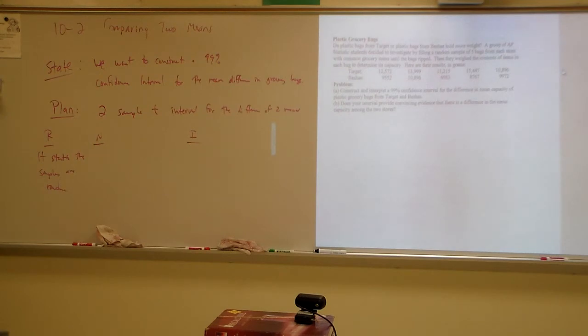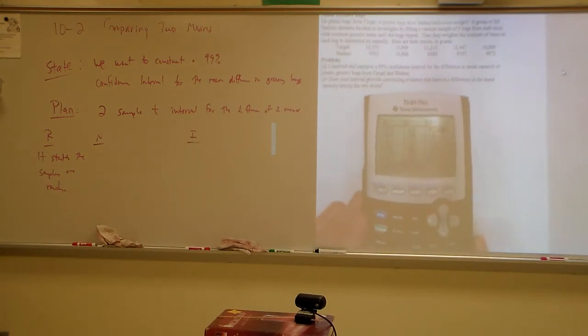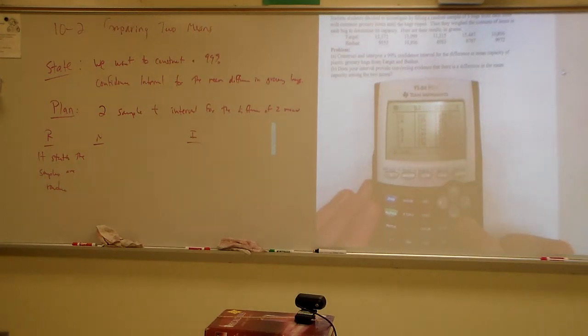Random, random sample. It states the samples are random. N, uh-oh. We've only got five, five in each sample. That's not good. That means that's extra work for us, but we can do it. So, we go to our little calculator. And I am going to hit stat, I'm going to hit edit. Hope you guys can see that up there. Stat edit. I've got to go to my lists and I've got to clear them. Clear them. So, in L1, I've got 12, 5, 7, 2, 13, 9, 9, 9, 11, 2, 15, 15, 4, 4, 7, and 10, 9, 8, 10, 8, 9, 6. And then I do the same thing for L2, 9, 5, 5, 2, 10, 8, 9, 6, 6, 9, 8, 3, 8, 7, 6, 7, and 9, 9, 7, 2. So, I have my values entered in there.